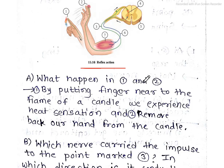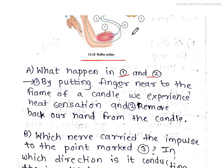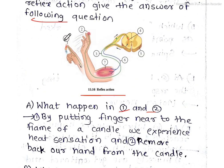So first question: What happened in 1 and 2? Let me explain it a little bit. We have a candle, and we have a hand on the candle. Let me bring a candle and make it close to us.